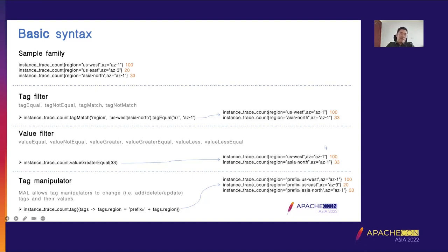MAL provides various functions for filtering or calculation. The tag filter filters metrics according to their tags. It includes tag equal, tag not equal, tag match, and tag not match. Tag match supports regular expressions. For example, this expression filters where region is US-West or Asia-North and AZ is AZ1. After the filter, the result metric where region is US-East and AZ3 was dropped.